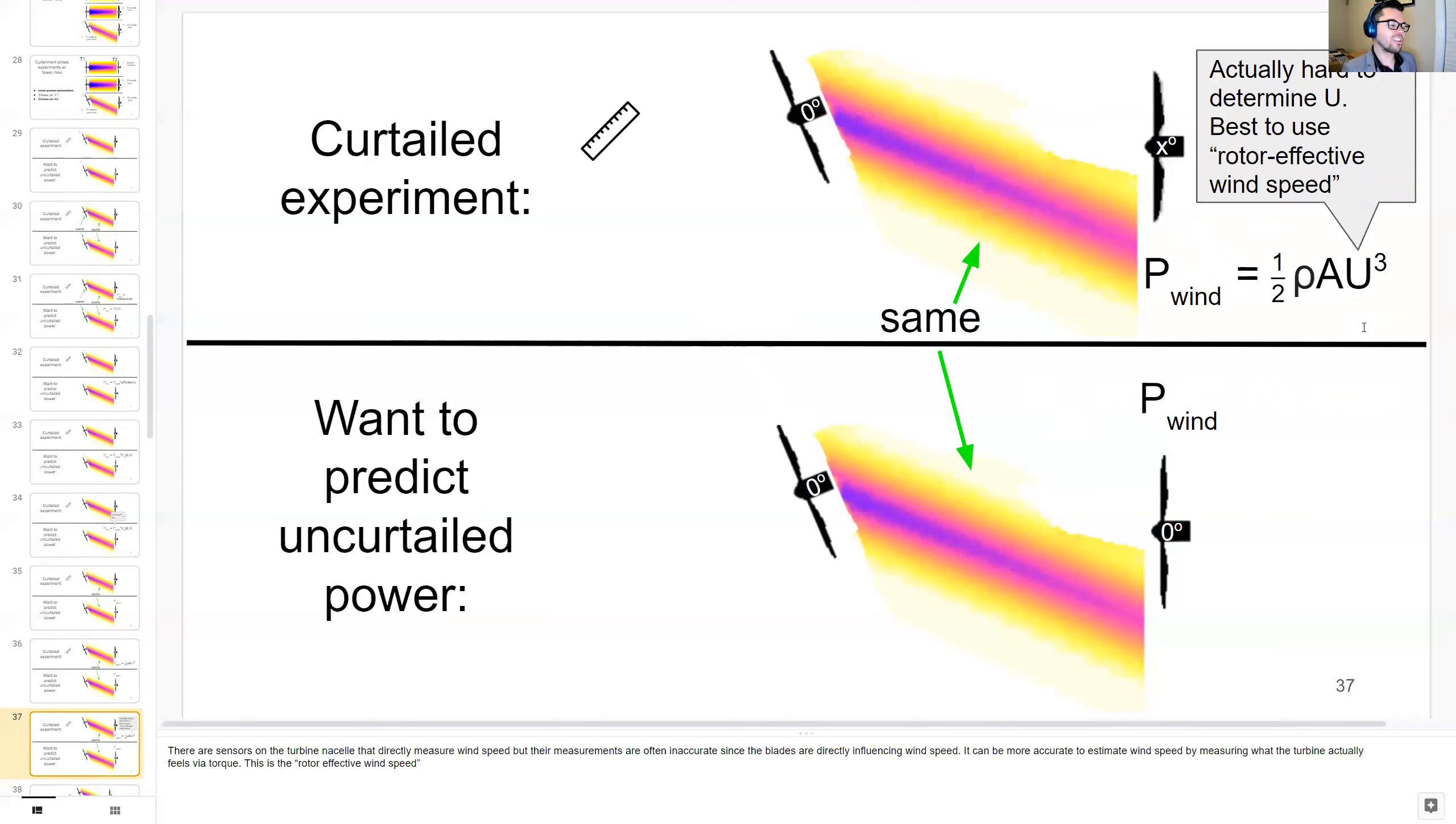There are sensors on the turbine nacelle that directly measure wind speed, but their measurements are often inaccurate since the blades are directly influencing wind speeds. It can be more accurate to estimate wind speeds by measuring what the turbine actually feels via torque. This is called the rotor effective wind speed.